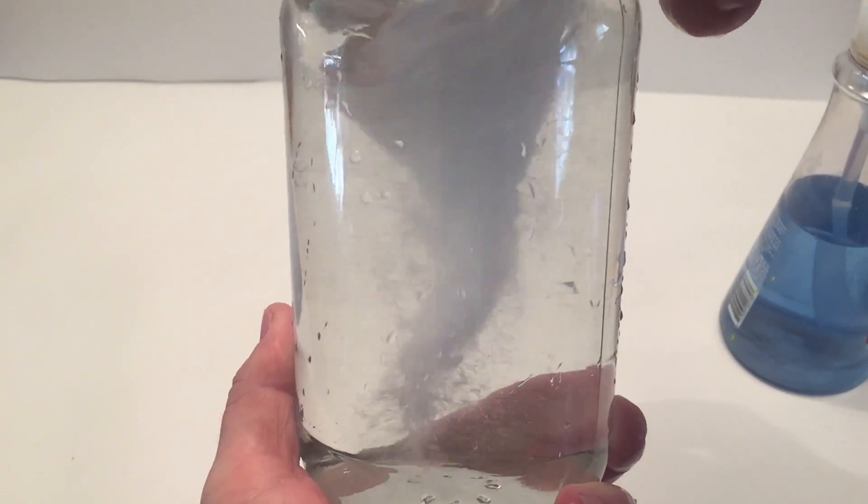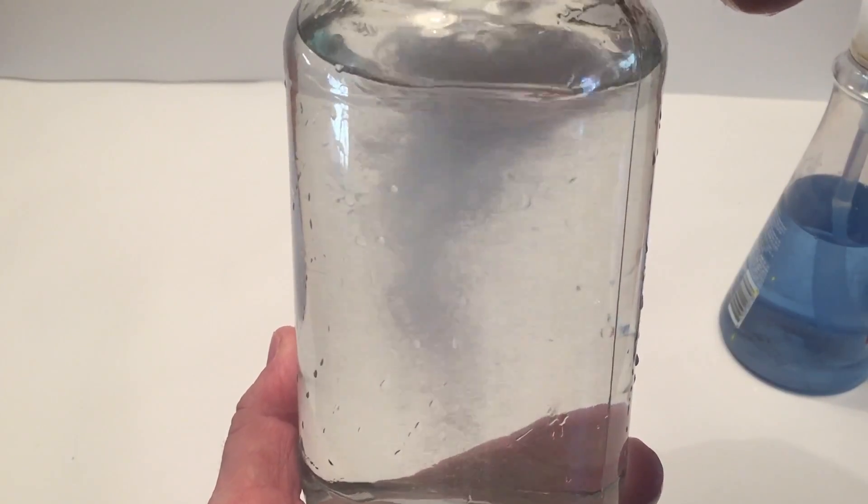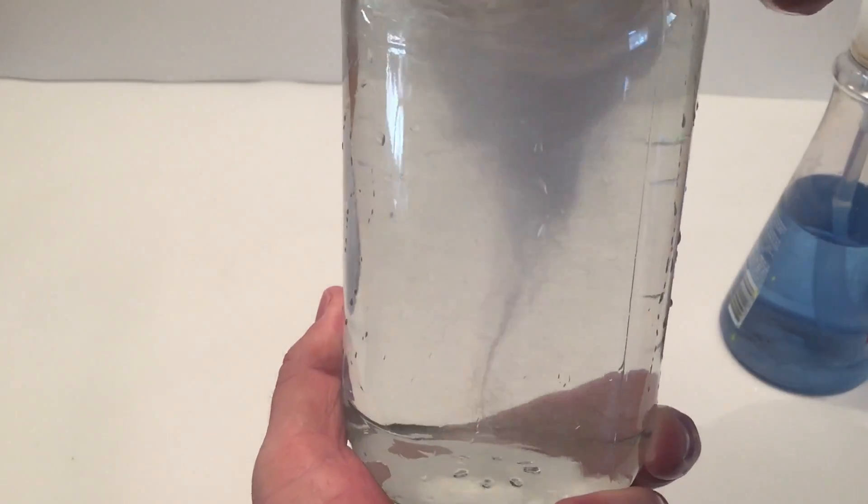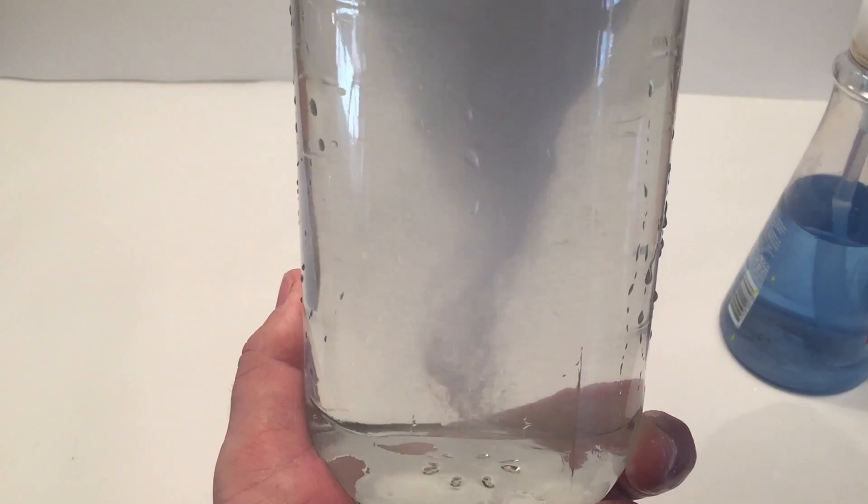This will have a little bit more of the tornado. It's a little bit more darker or cloudy, so you really see the tornado better this way. But the more you shake it, the more bubbles it gets.